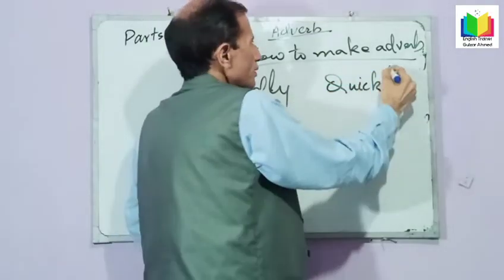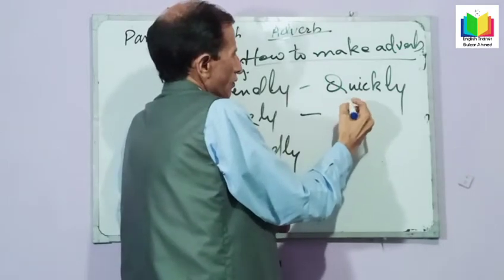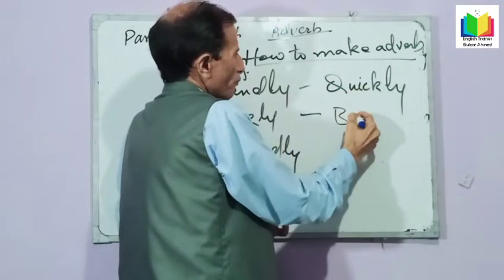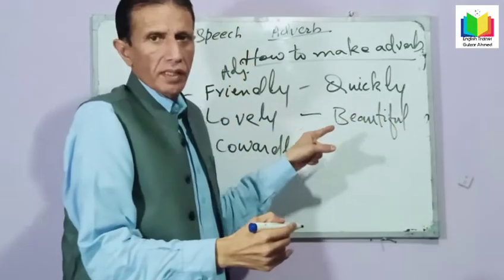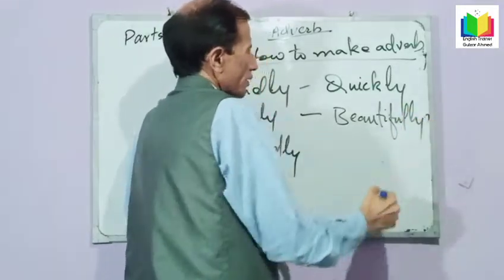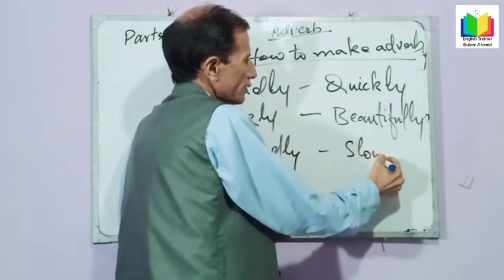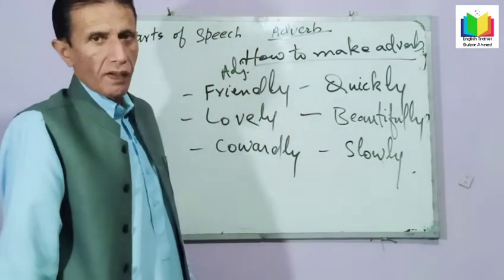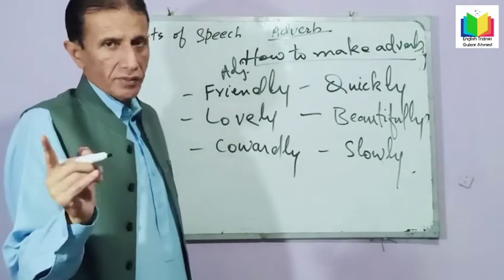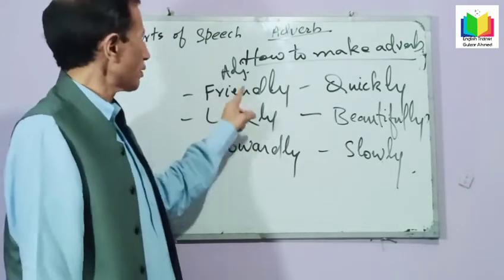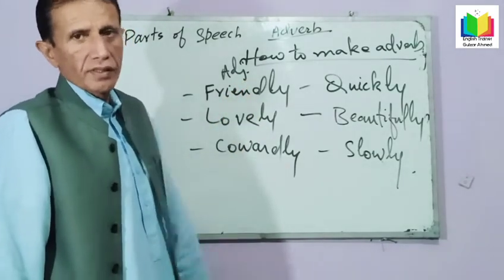But if you take an adjective — like quick — and add -ly, you get an adverb: quickly. Similarly, slow becomes slowly. So: adjective plus -ly gives adverb. But noun plus -ly gives adjective.